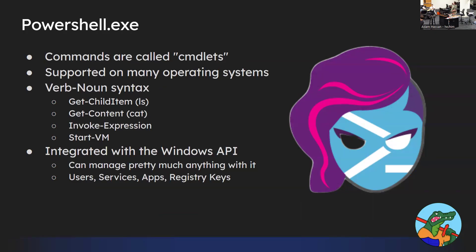PowerShell has really specific cmdlets like Start-VM, Stop-VM, and whatever you want to do there's probably a cmdlet for it. It's very highly integrated into Windows APIs, meaning it can manage pretty much everything — VMs, files, users, services, apps, registry keys. You can also get custom cmdlets and make your own, and you can make aliases. On PowerShell, because nobody wants to remember Get-ChildItem, you can also use GCI as a shortcut, and ls is aliased to Get-ChildItem because everyone's used to ls from Linux.